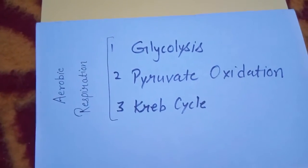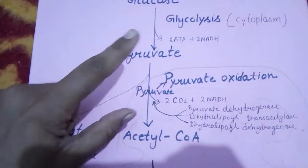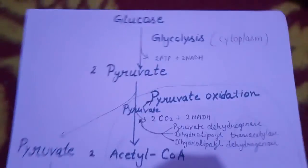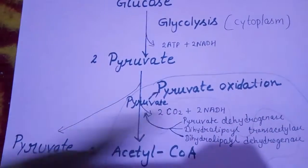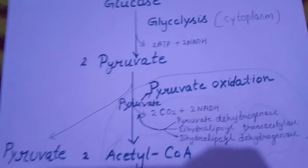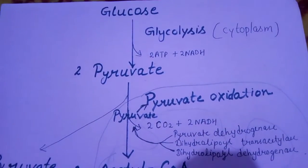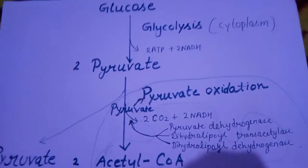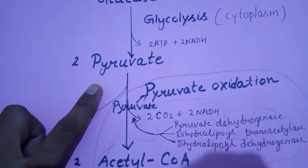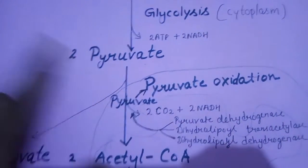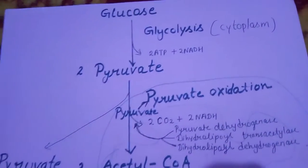Here we have the glucose molecule, which undergoes glycolysis and produces two molecules of ATP and two NADH. The process of glycolysis takes place in the cytoplasm in both prokaryotes and eukaryotes, and the end product of glycolysis is pyruvate.